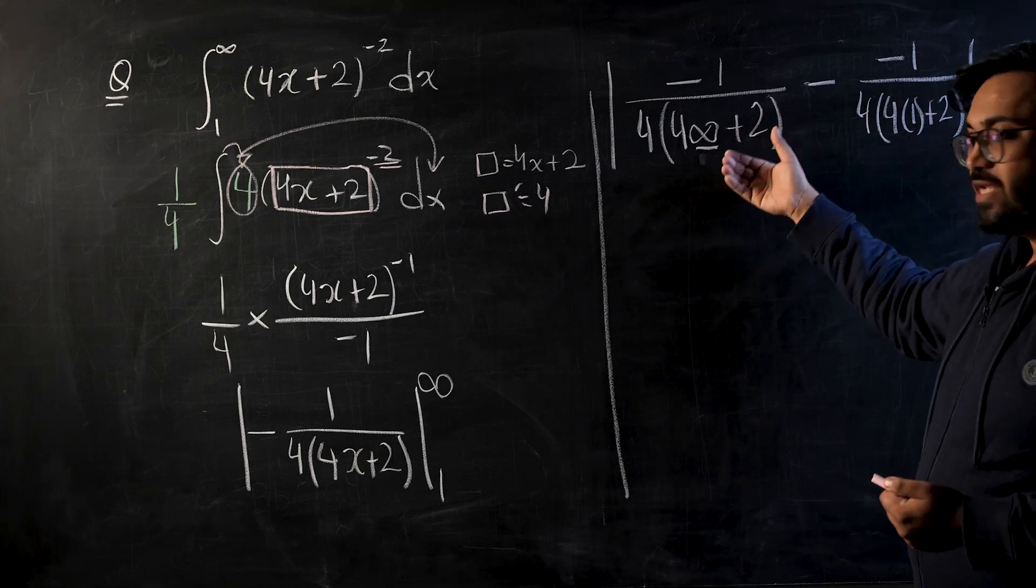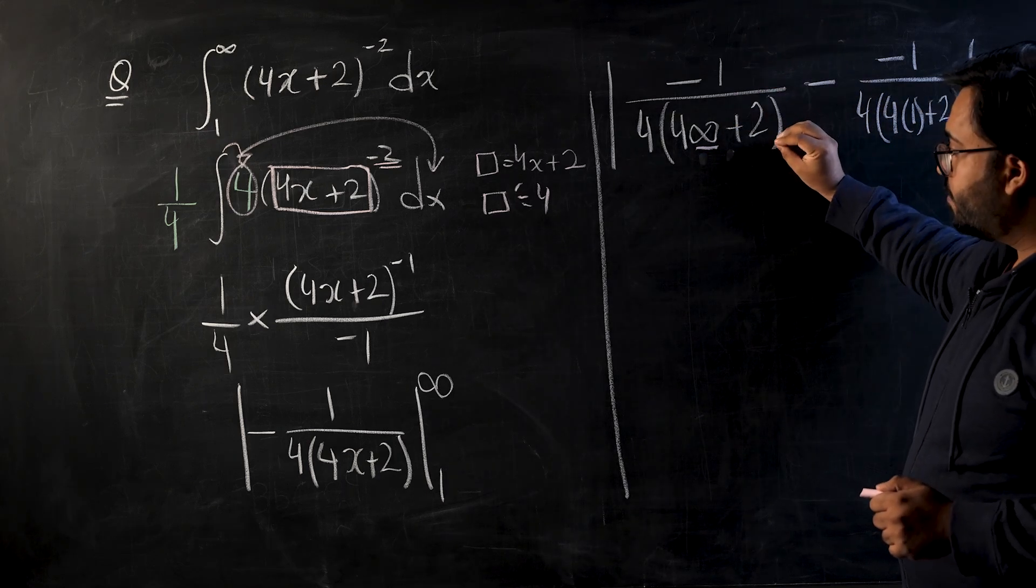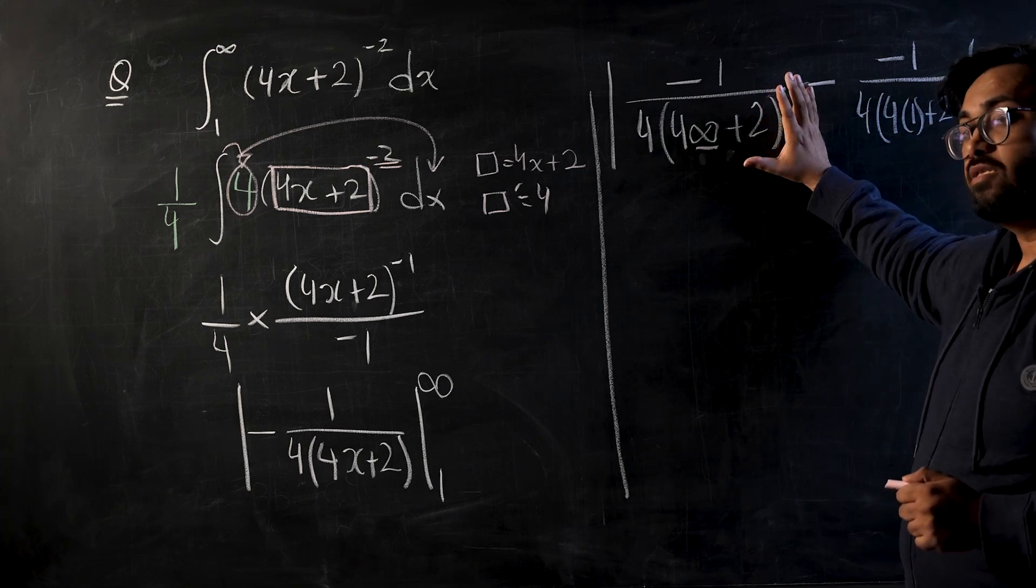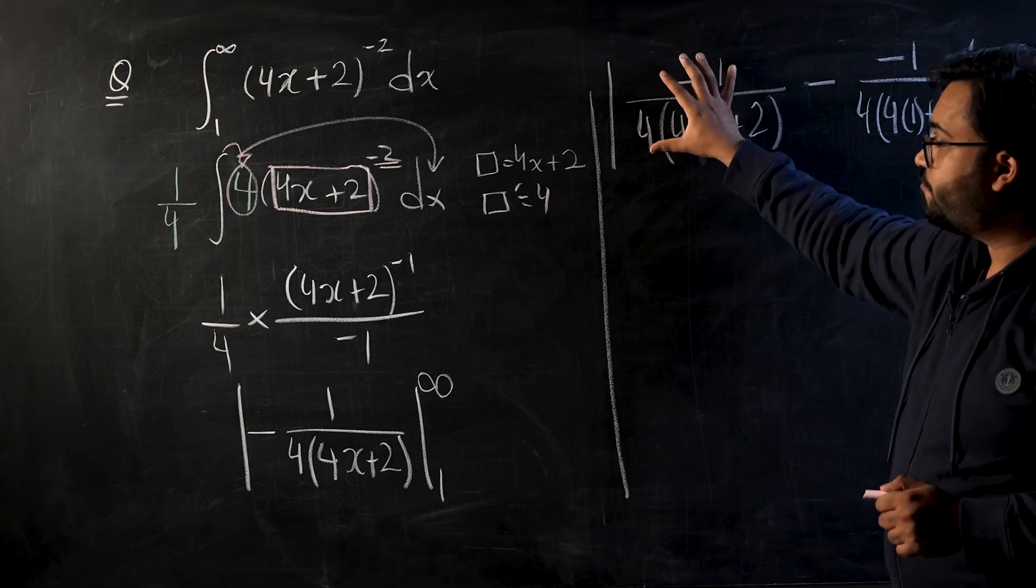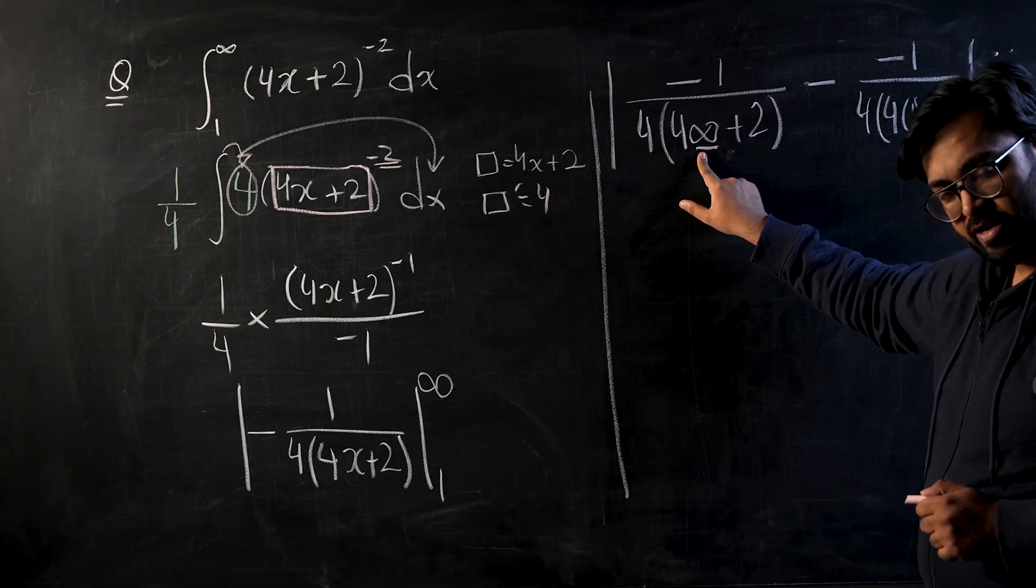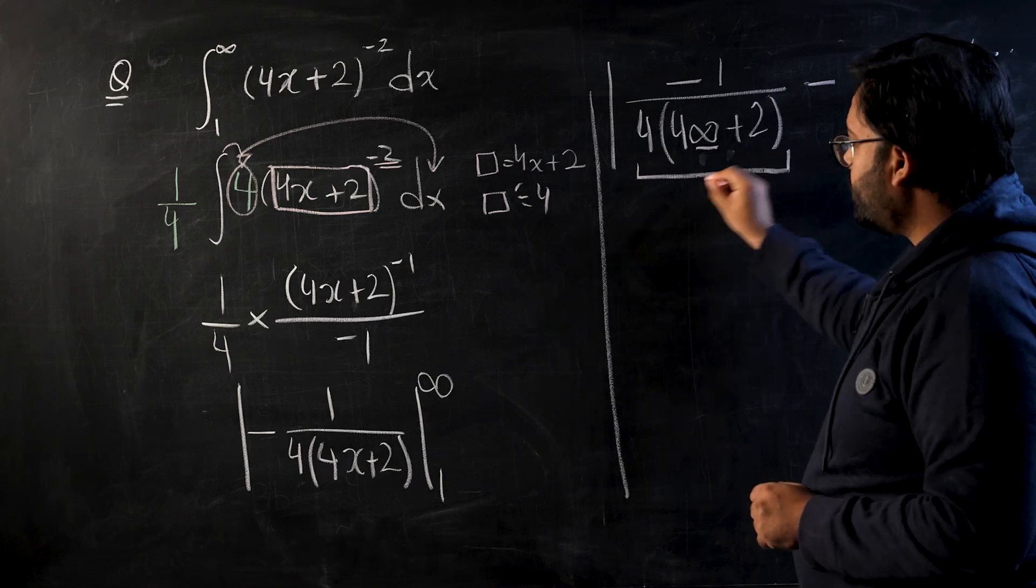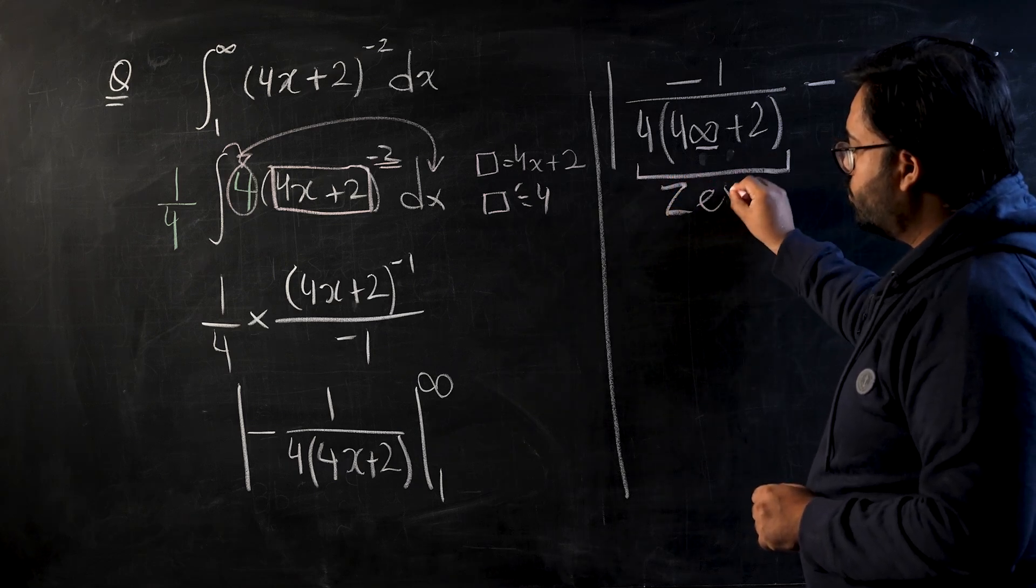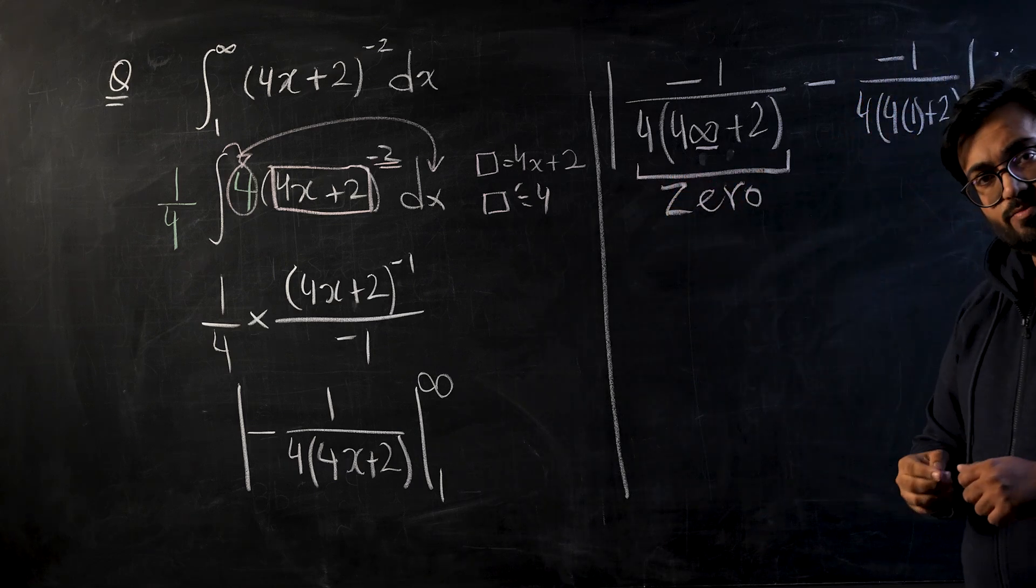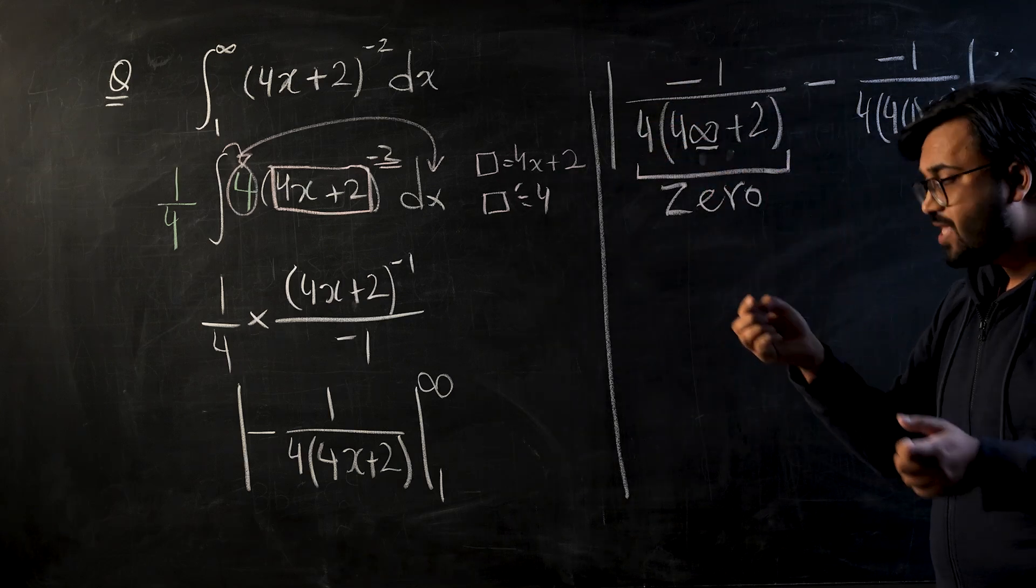Now when we put value of infinity in the denominator, what we are saying is that we are increasing the value of denominator enormously. So if the value of the denominator increases enormously, the whole fraction becomes very small, and when it approaches infinity this fraction will become zero.